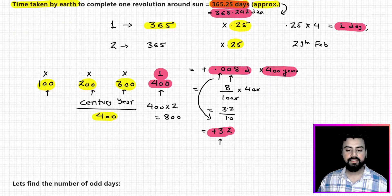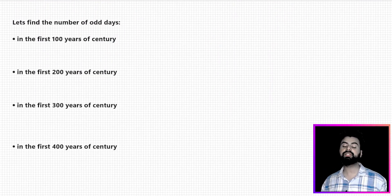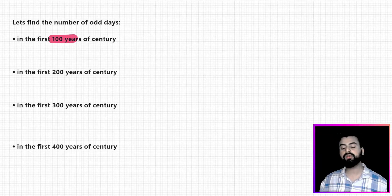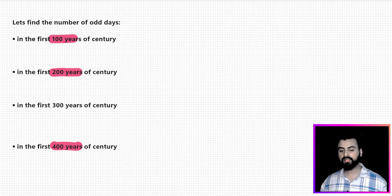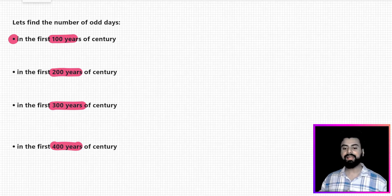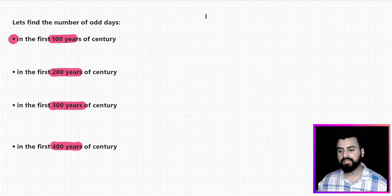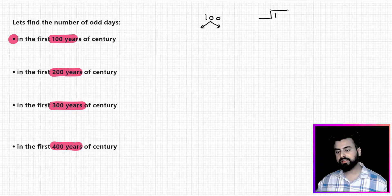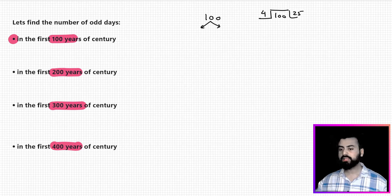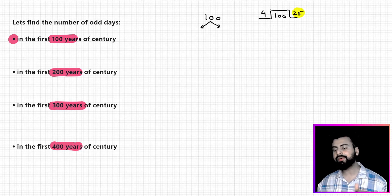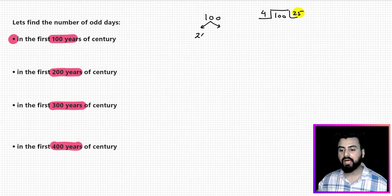Now let us calculate the number of odd days in the first 100 years of a century. In 100 years, we first find how many leap years there are. Dividing 100 by 4 gives 25, but in reality there are only 24 leap years, because the 100th year is not a leap year — even though 100 is divisible by 4 — since we compensate for the error.